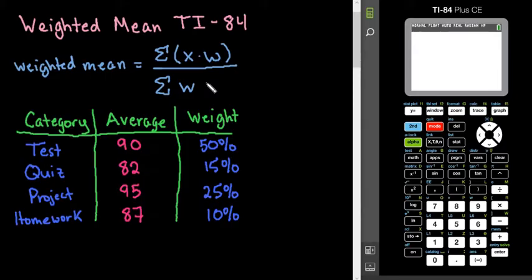In order to do hand calculations, recall that you would take your average value for that category times the weight of the category, and you would create another column, and then you would sum that and divide it by the sum of the weights.